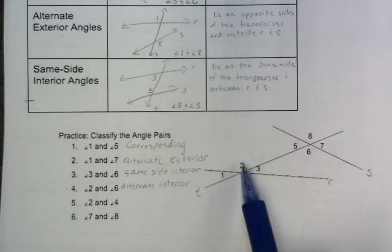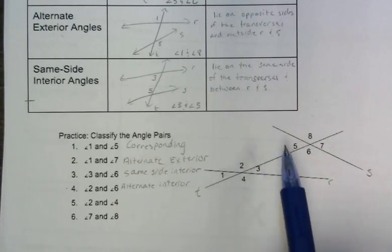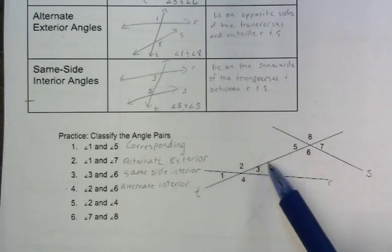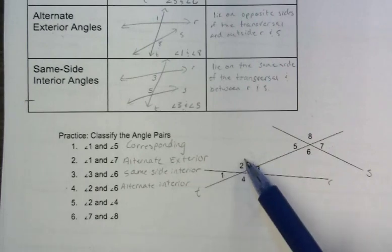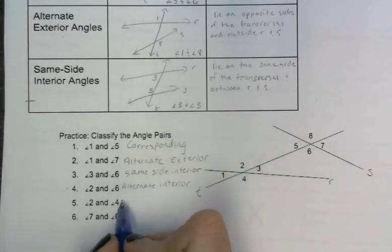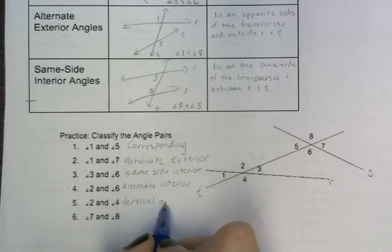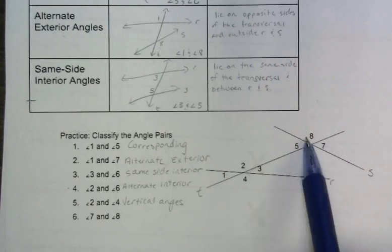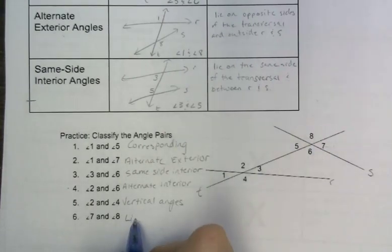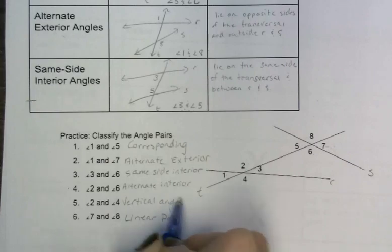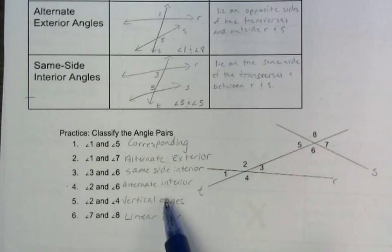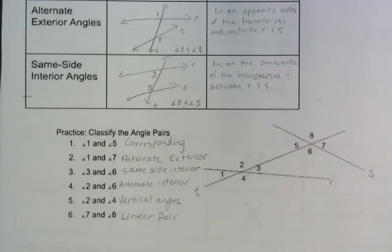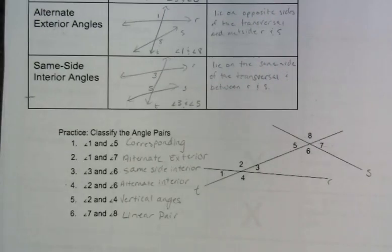Angles 2 and 4 are actually referring to some of our old vocabulary words. Here I've got that X situation where 2 and 4 are opposite each other — remember those are called vertical angles. Angles 7 and 8 are on a line together, so they are called a linear pair. We'll still be seeing these a lot, so don't forget about the ones we already know. Hopefully that vocabulary will help you with your 3.1 homework — thanks for watching!